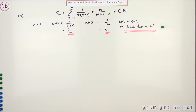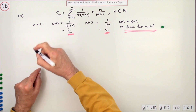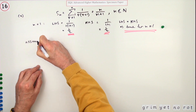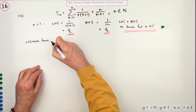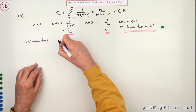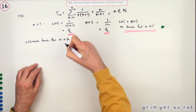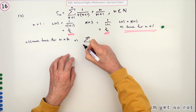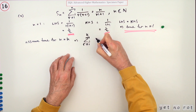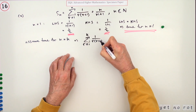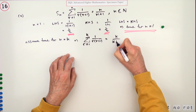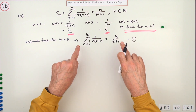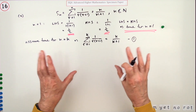That gets the first mark. Now state the inductive hypothesis: assume true for n equals some arbitrary number k. If that were the case, then the summation from 1 to k of 1 over r(r+1) should give k over k+1 — I'll call that equation (1). This is the inductive hypothesis; you have to call that into play or it's not a proof by induction.